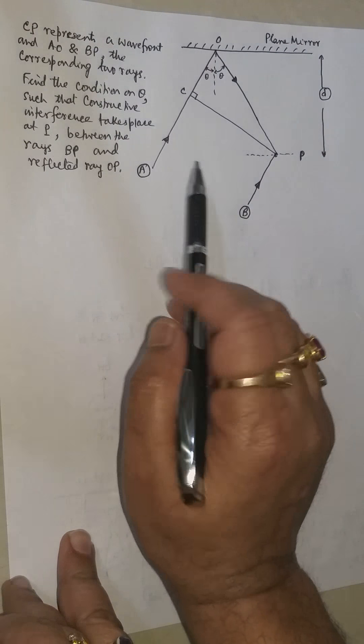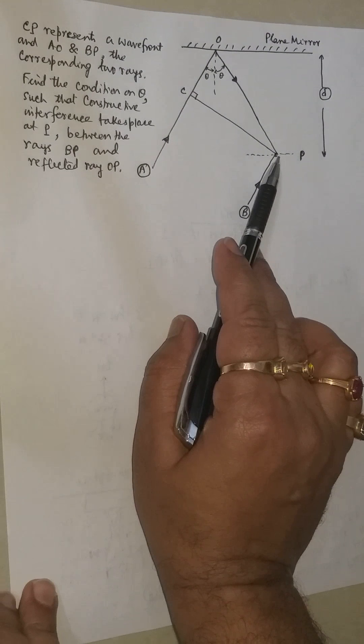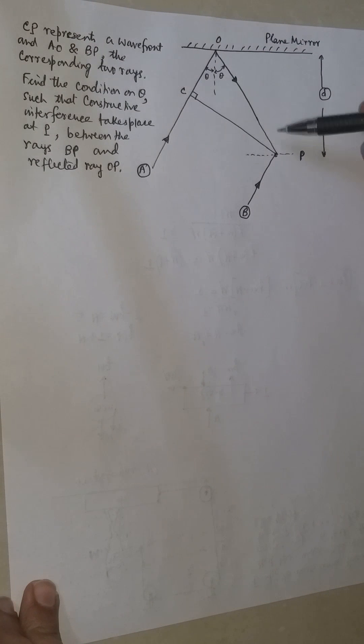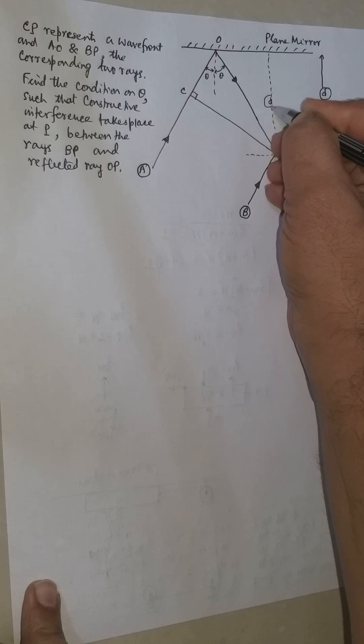It is asked: what should be the value of theta so that at P a constructive interference takes place? This distance is D perpendicular from the mirror. For convenience, we can draw a perpendicular, so this is D.